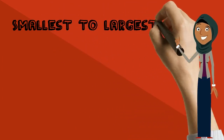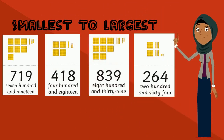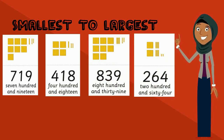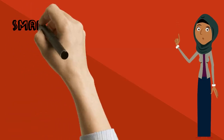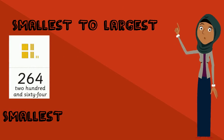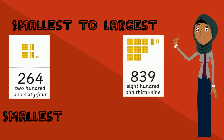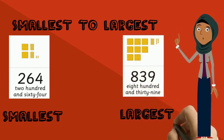Now let's put these four numbers in order from smallest to largest. Let's compare them first to see which one is the smallest and which one is the largest — in other words, which one has the smallest hundreds and which one has the biggest hundreds. 264 with two hundreds is the smallest, and 839 with eight hundreds is the largest.